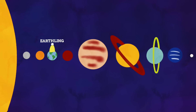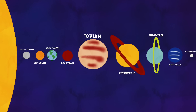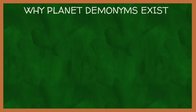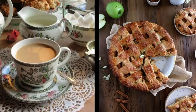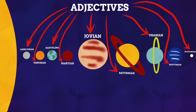Demonyms exist to denote people who live in certain places, and no people — nor anything else with a pulse — live on these planets, at least that we know of. These demonyms have no real reason to exist, but they do anyway. There are actually a few reasons why we have these demonyms in our language. The first is that demonyms don't relate to just people — they can also be used as adjectives. We see this with demonyms on our own planet with terms like English tea or American pie. When it comes to demonyms for other planets, it's mainly in their adjective form that we use them, to describe things from those planets. Granted, there isn't all that much on these other planets, but enough to warrant the use of these words.